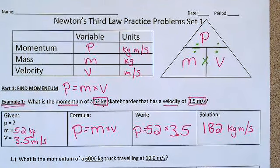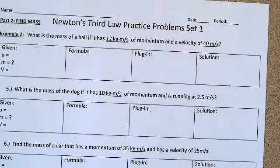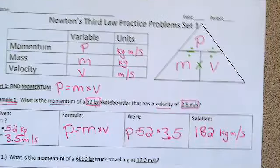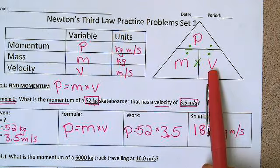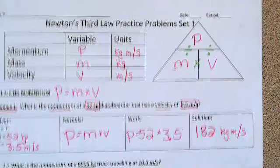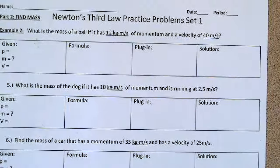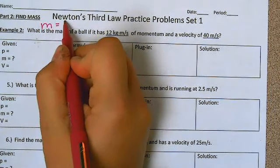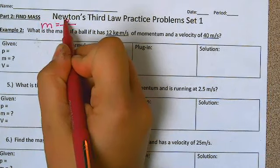Let's look at part two. In part two we are finding the mass. When we are finding mass we are going to do momentum divided by velocity. For all of part two we're using the formula: mass equals momentum divided by velocity.